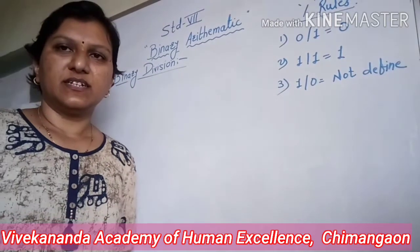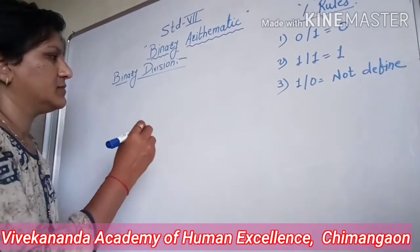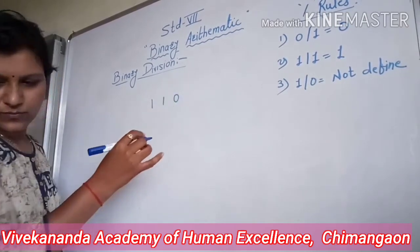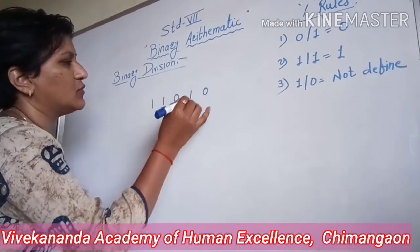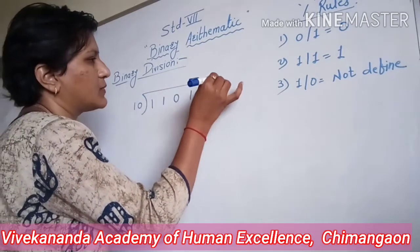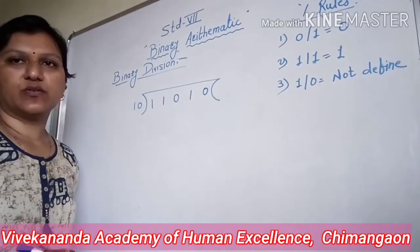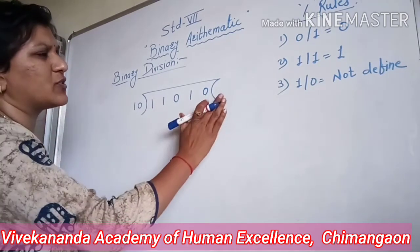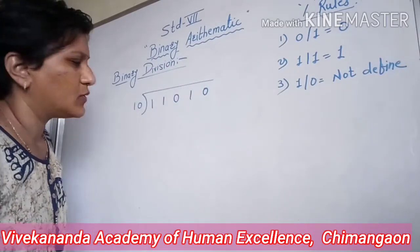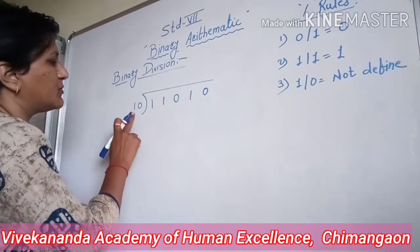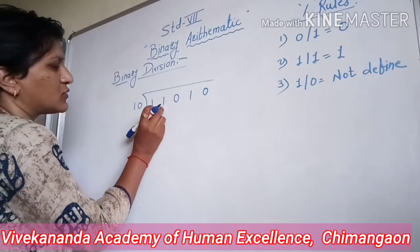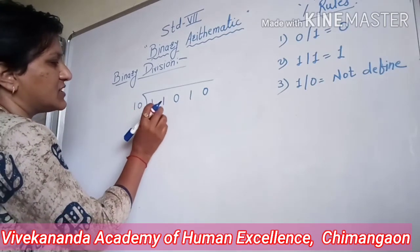Let us consider our first example for binary division: 11010 is divided by 10. This is how we are going to perform the division. Since the divisor has 2 digits, we are going to consider the first two digits of the dividend to begin.